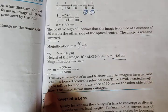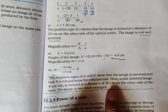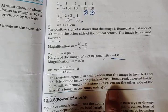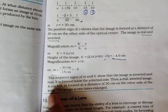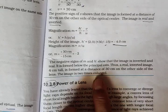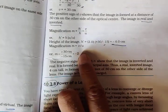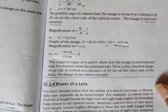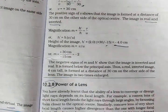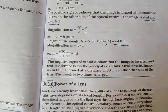Thus, a real inverted image 4 cm tall is formed at a distance of 30 cm on the other side of the lens. This image is 2 times enlarged. These two sums will help you solve any sum given in the back exercise.